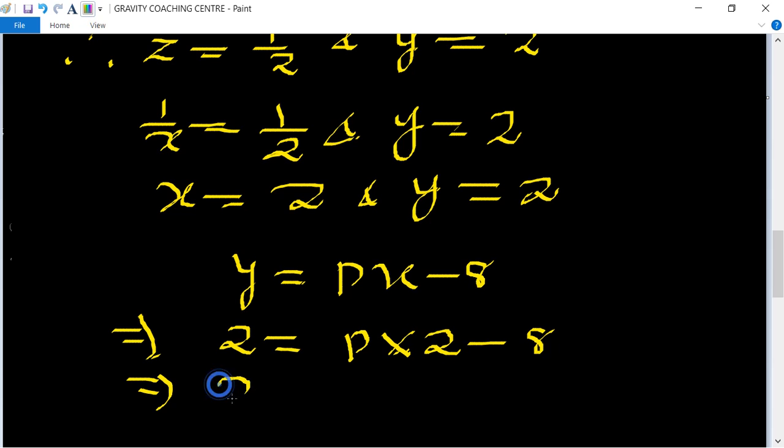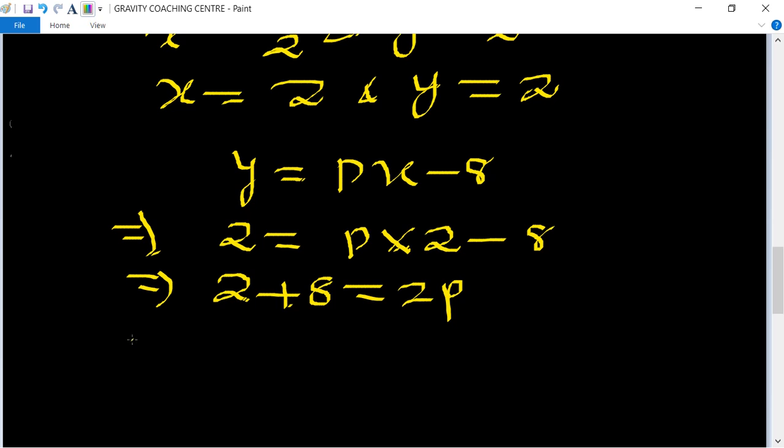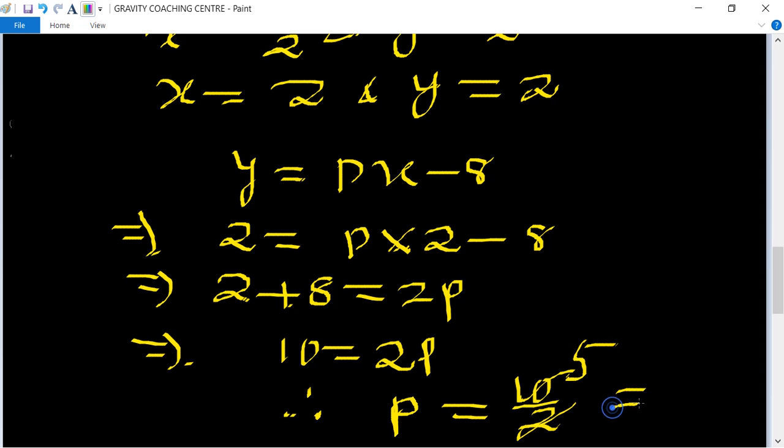This implies 2 + 8 = 2p, so 10 = 2p. Therefore p = 10/2 = 5, which is the required answer.